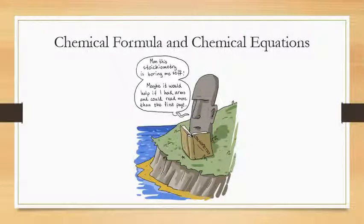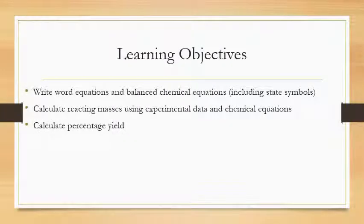Welcome to the next topic: chemical formulae and chemical equations, also known as stoichiometry. The learning objectives of this unit are to write word equations and balance chemical equations, including state symbols, calculate reacting masses using experimental data and chemical equations, and calculate percentage yields of reactions.